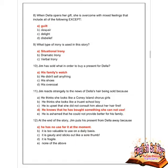Next question: Jim has sold what in order to buy a present for Della? Options are his family's watch, he didn't sell anything, his shoes, and his overcoat. Option A is correct — Jim sold his family watch to buy a present for Della.